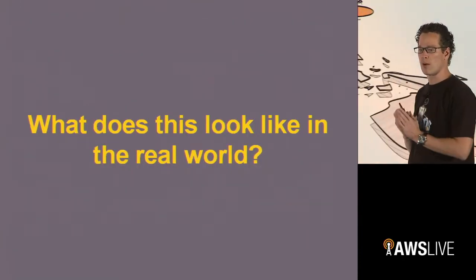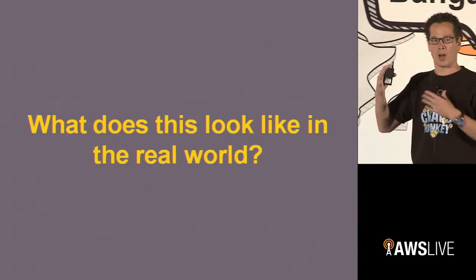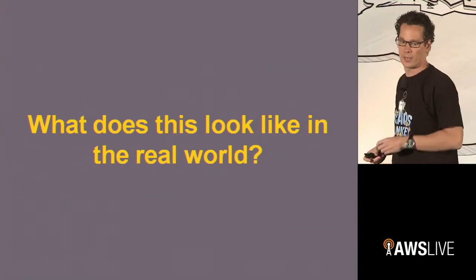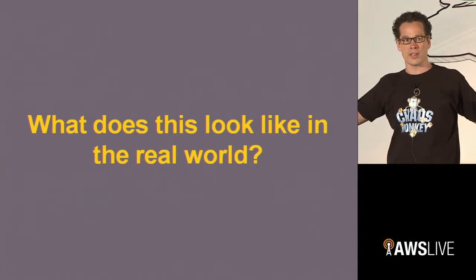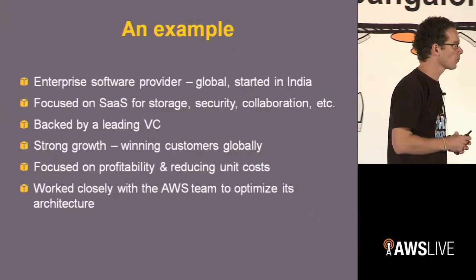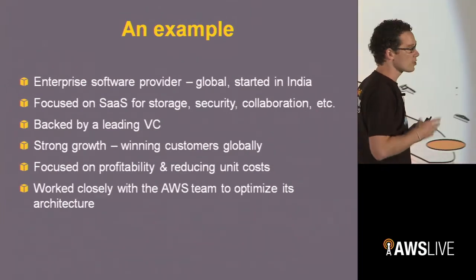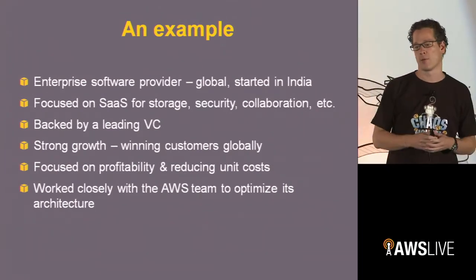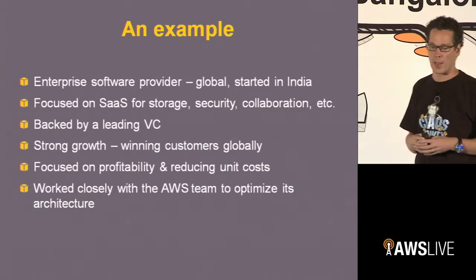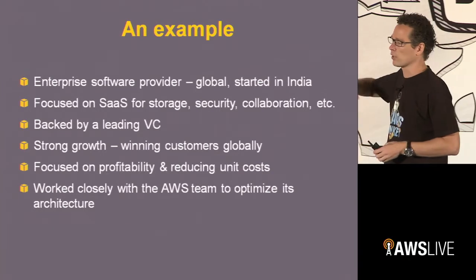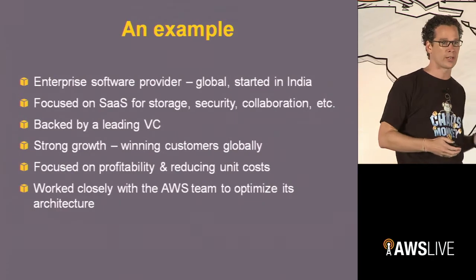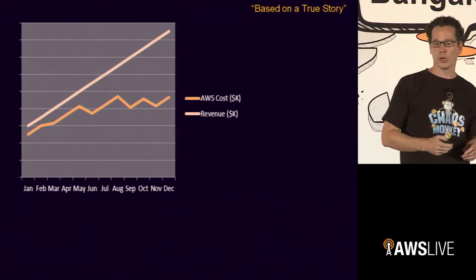Let's think first about what that looks like in reality. These are all concepts — it's nice to say we reduce our cost and you can architect smartly. But how do these things come together and help customers in reality? Let's look at one example. This is an enterprise software provider, started in India but with customers globally. Focused on software as a service for storage, security, collaboration. Backed by one of the leading global venture capital firms, and they've always been growing strongly but focused on cost as well, working very closely with our team.